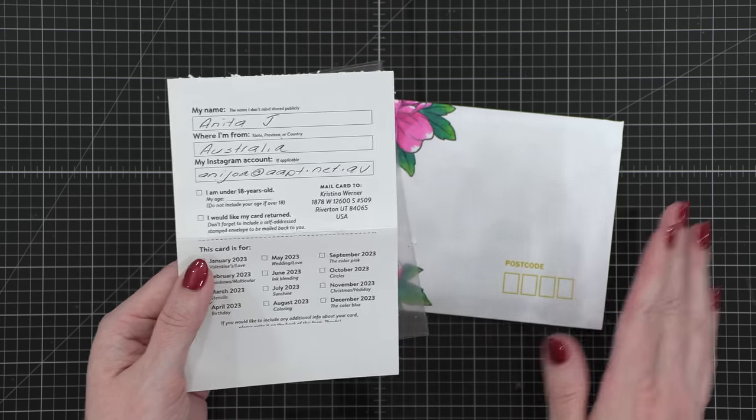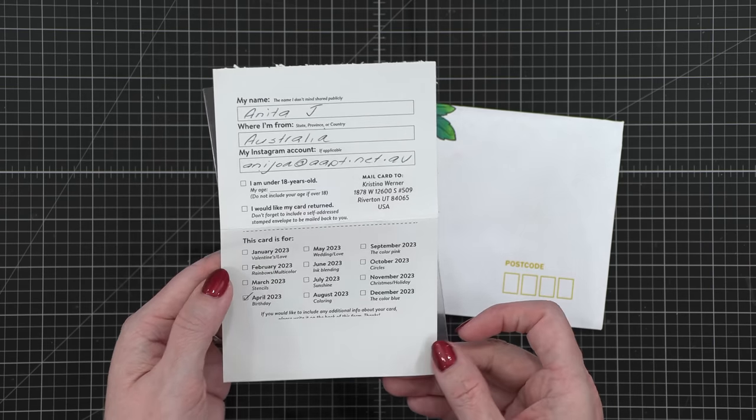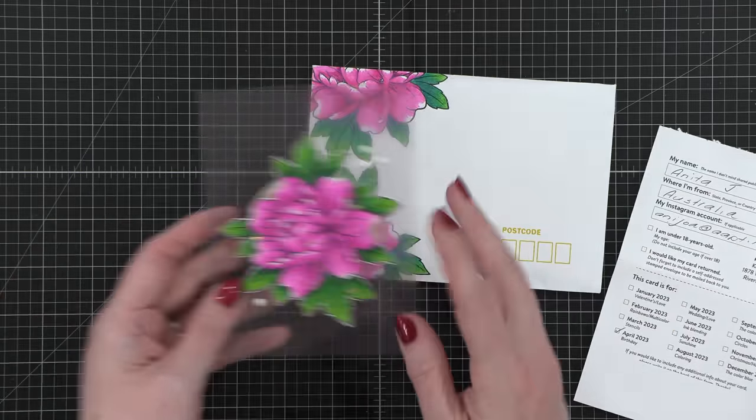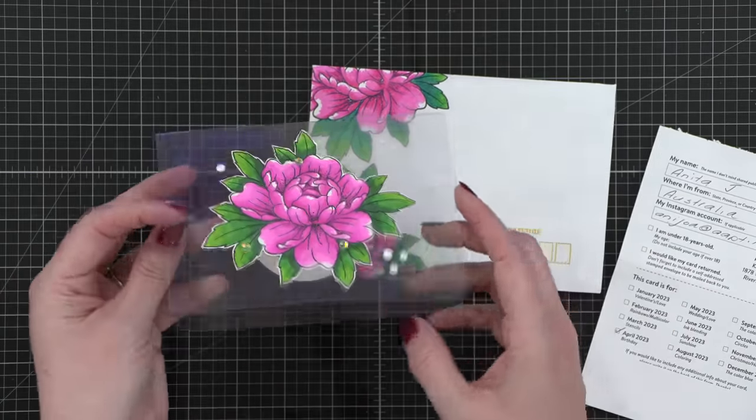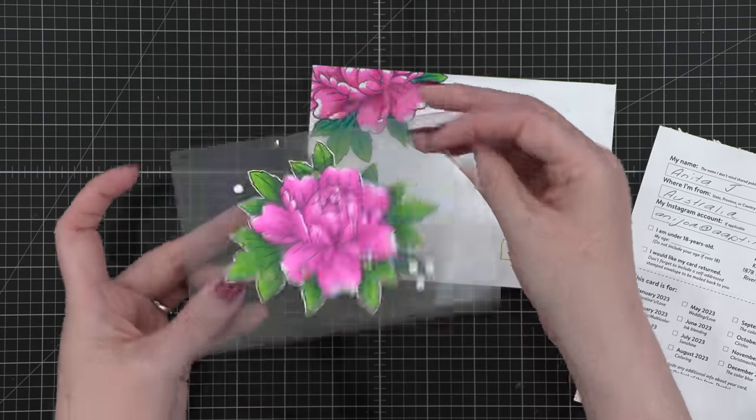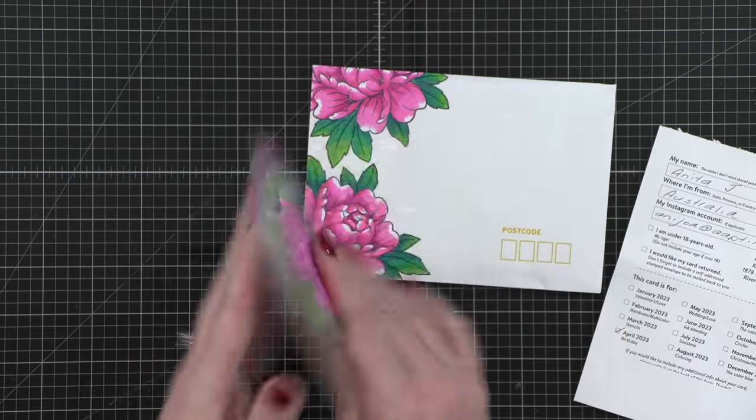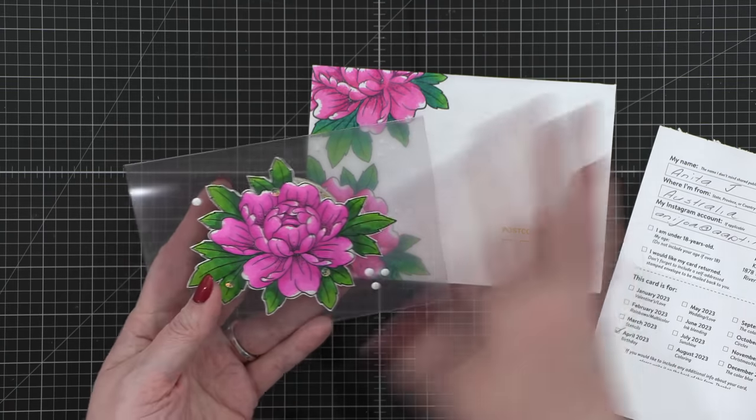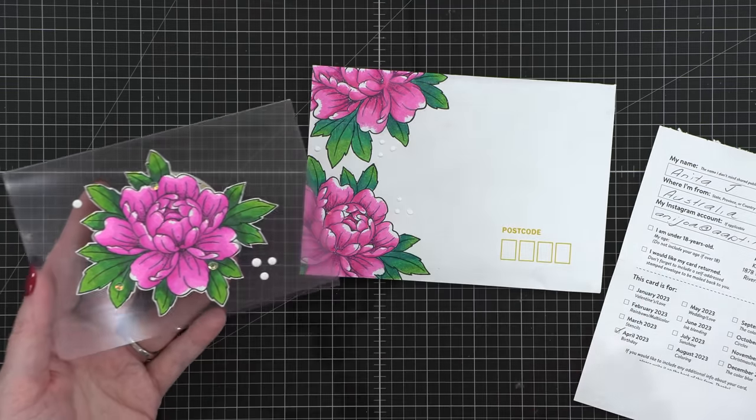This next card and envelope set is from Anita in Australia, also for the month of April. Look how fun this is. There's her envelope. And then the card itself is clear and you open it up and then it says, hope your birthday is as special as you are. And there's even a little flower on the back. Just every single surface and corner has been thought of. So beautiful.